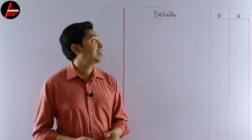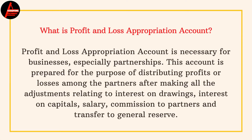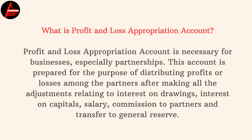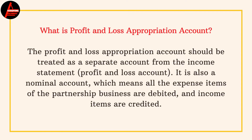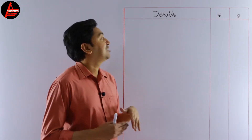What is the Profit and Loss Appropriation Account? It is necessary for businesses, especially partnerships. This account is prepared for the purpose of distributing profits or losses among the partners after making all adjustments relating to interest on drawings, interest on capital, salary, commissions to partners, and transfer to general reserve. It should be treated as a separate account from the income statement. It is also a nominal account, which means all expense items are debited and income items are credited.